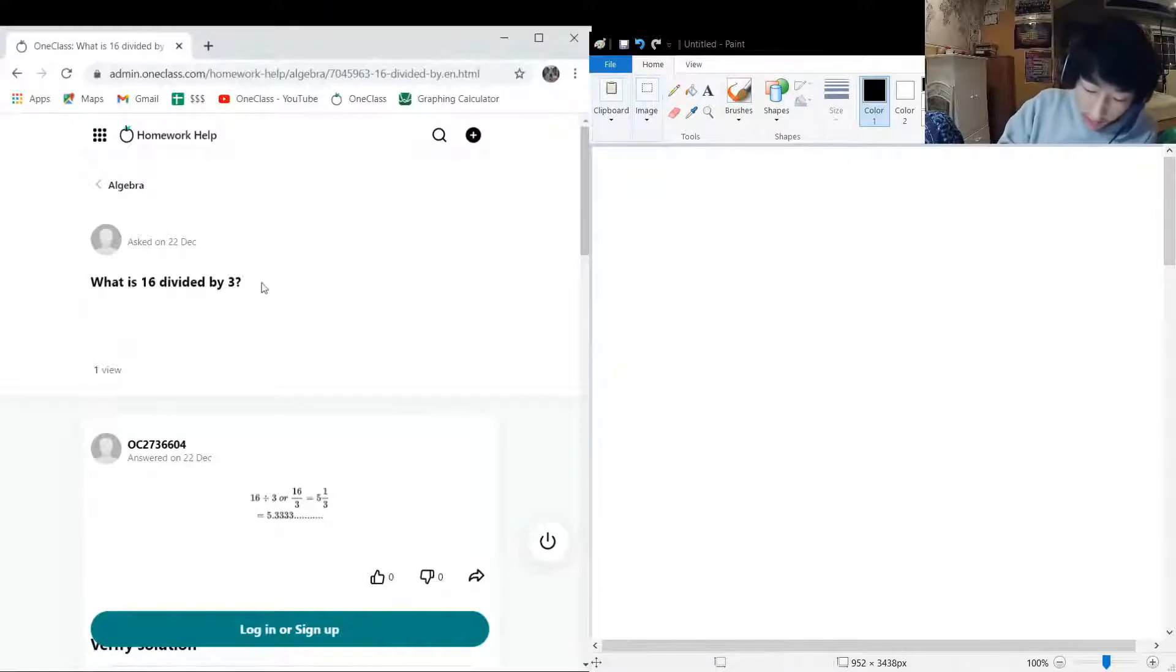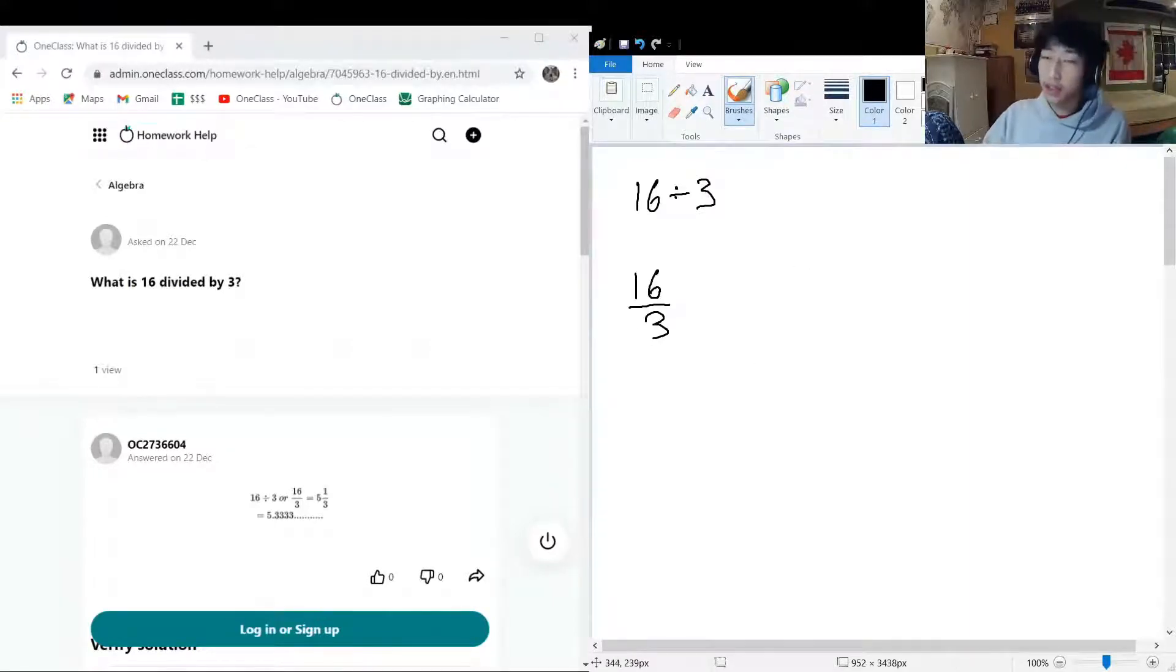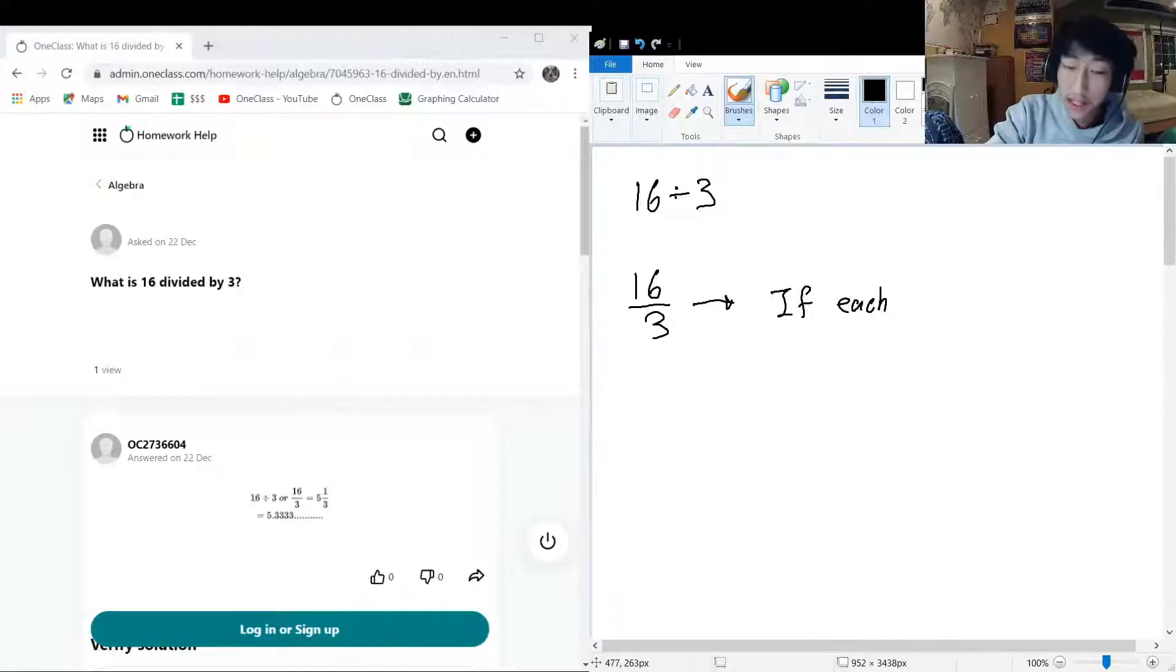Now there are many ways that we can write this. We can write this as 16 divided by 3. We can also write this as a fraction, 16 over 3. I think it's better to think about it in a more fractional sense because fractions are very commonly used, especially as you get deeper into the world of mathematics. So let's think about what this fraction means.